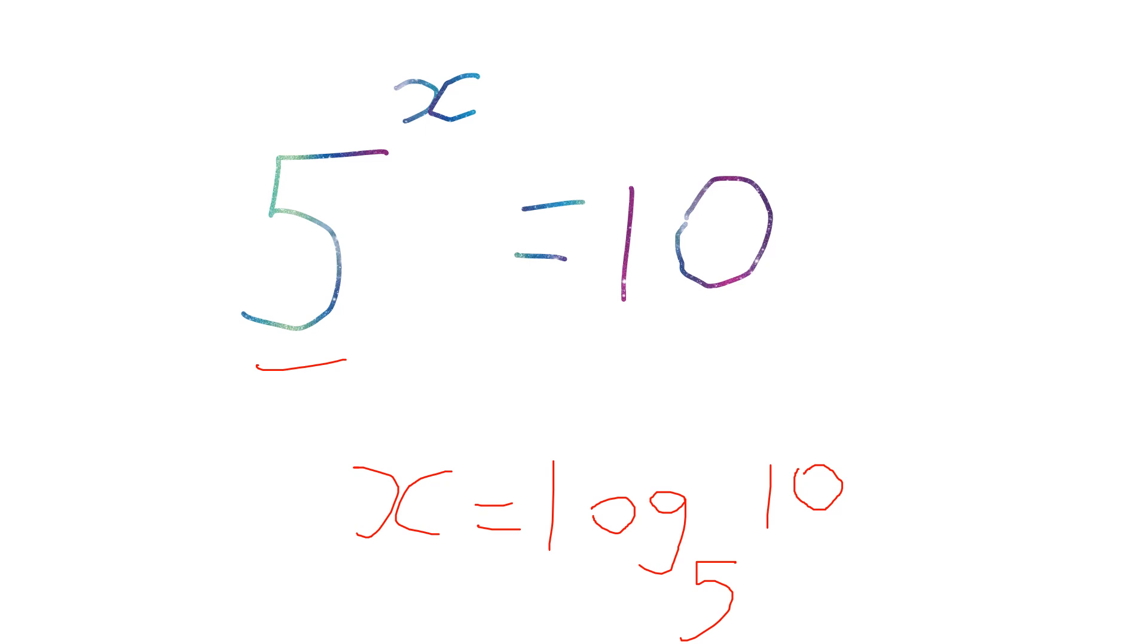Here we go, there we go. So we get 1.43 to 2 decimal places. We actually get 1.4306765 and so on. So x is approximately 1.43 to 2dp. Apologies for taking about five minutes to work out the answer.